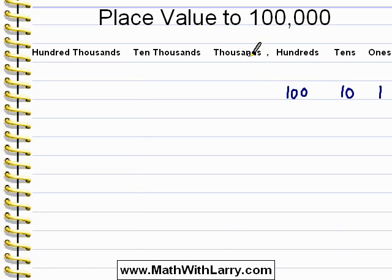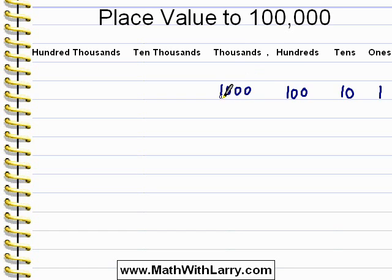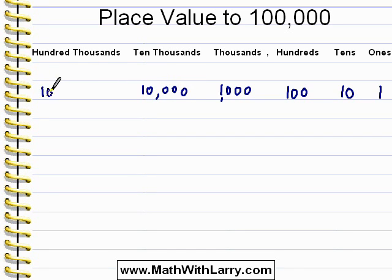Now in between the hundreds and the thousands place, we're going to put a comma in our numbers, and that just helps us to see the place values more easily — that's all it is. The thousands place, and then to the left of that we have 10 times that, which is the ten thousands place. And to the left of that, we have the hundred thousands place.